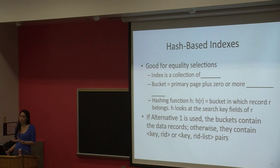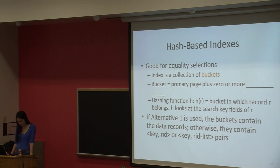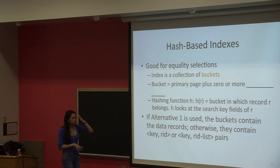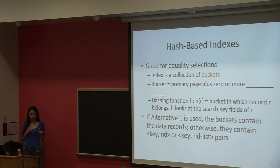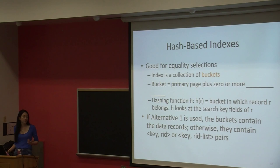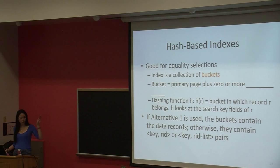Traditionally, buckets are fixed size — if a bucket has a limit of 10 elements and it's already full, you should not add an 11th. We call the fixed-size part the primary page of the bucket. However, we can actually add more beyond the primary page — similar to the overflow pages idea I talked about earlier.